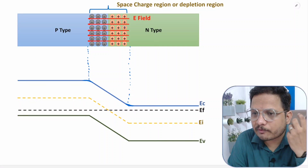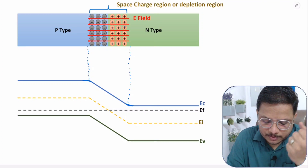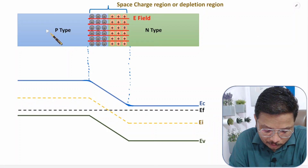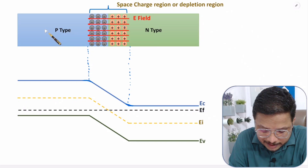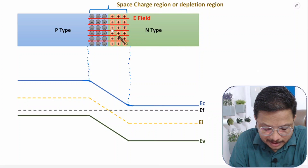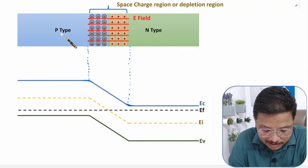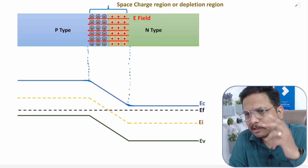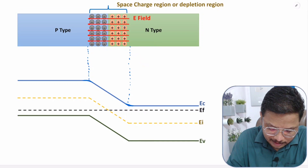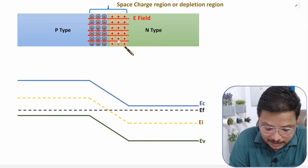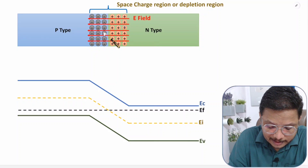Why is there no flow of current? The potential barrier will not allow flow of holes from P-side to N-side, and electrons of N-type are also not allowed to flow over to the other side. Holes of P-type are getting repelled by positive ions, and electrons of N-type are getting repelled by negative ions. But there are a few other things also that are happening.